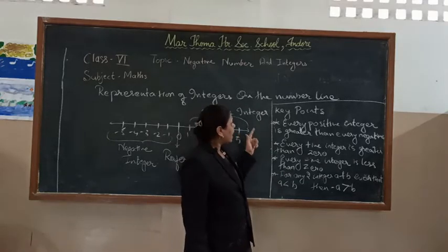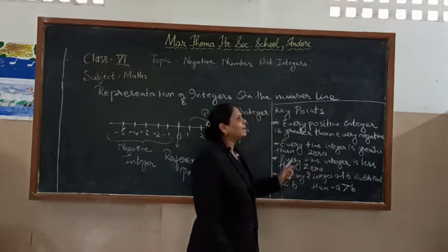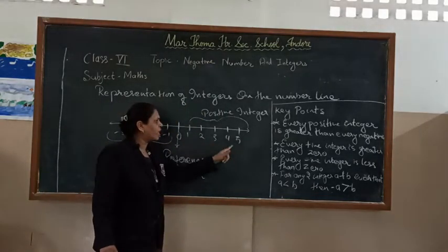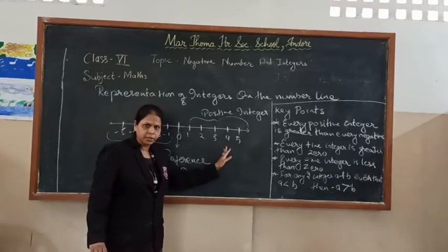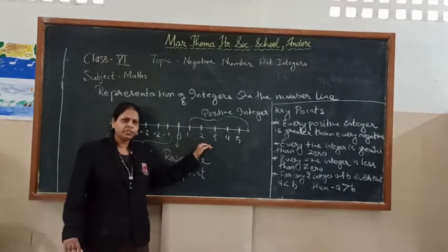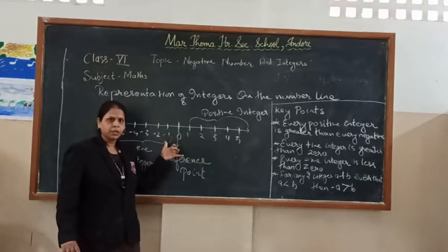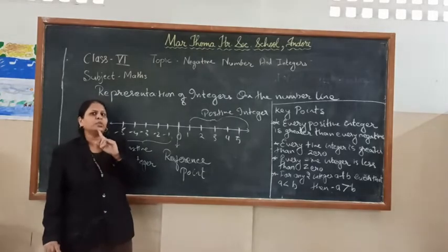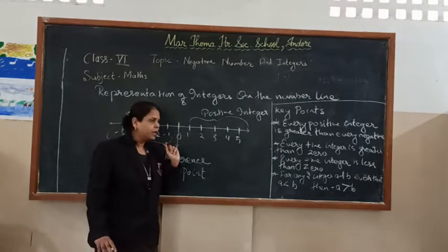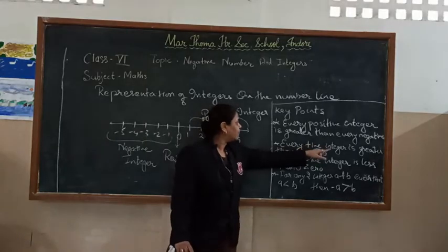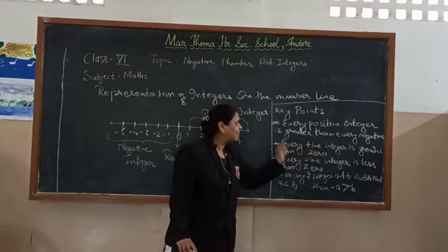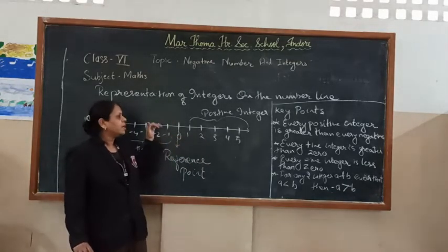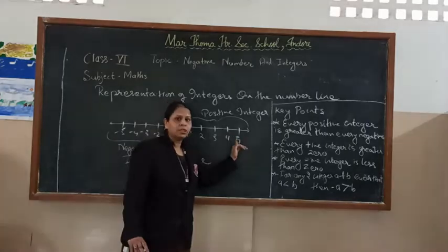The second key point is: every positive integer is greater than zero. We can see that 1, 2, 3, 4, 5 — all these are positive integers. Since zero comes to the left of all these numbers, and the number to the left is smaller, every positive integer is greater than zero. So zero is the smallest, then come all the positive integers.